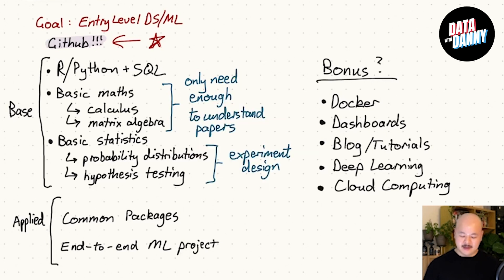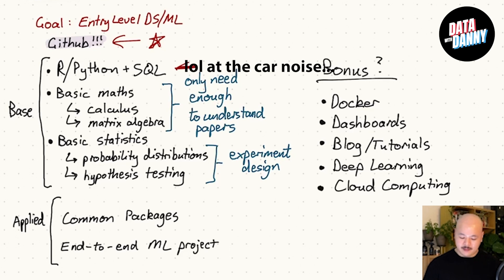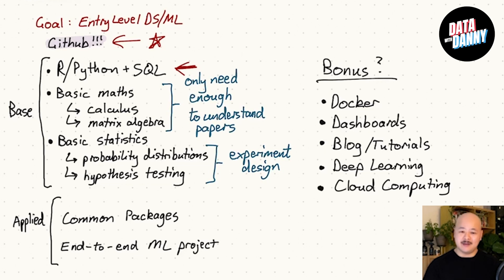Once you've set up your GitHub and learned how to make commits, do different branches, and all these base-level software development skills, you want to start learning either R or Python, depending on what sort of role you want to get into — the analyst role or the building type role. And definitely focus on SQL as well. A lot of the data that we work with lives in SQL databases, so it's very important to be very good at SQL.